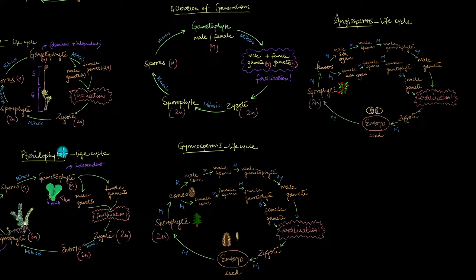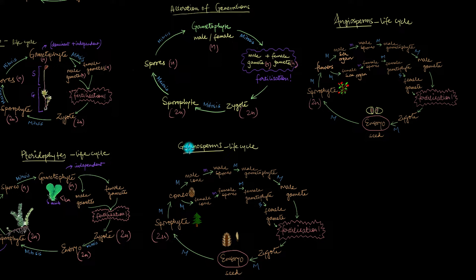Unlike pteridophytes, this sporophyte produces seeds, which keep the embryo protected and nourished inside. When a seed gets the right conditions, it will germinate into a new sporophyte. The gametophyte generation in gymnosperms and angiosperms is extremely reduced — so much so that you will find it inside the sporophyte.